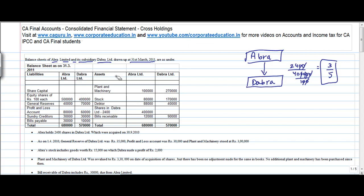So Abra holds 3 fifth of the share capital of Dabra Limited. Then I have bill receivable, bills payable, sundry creditors, profit and loss account, general reserve and share capital.